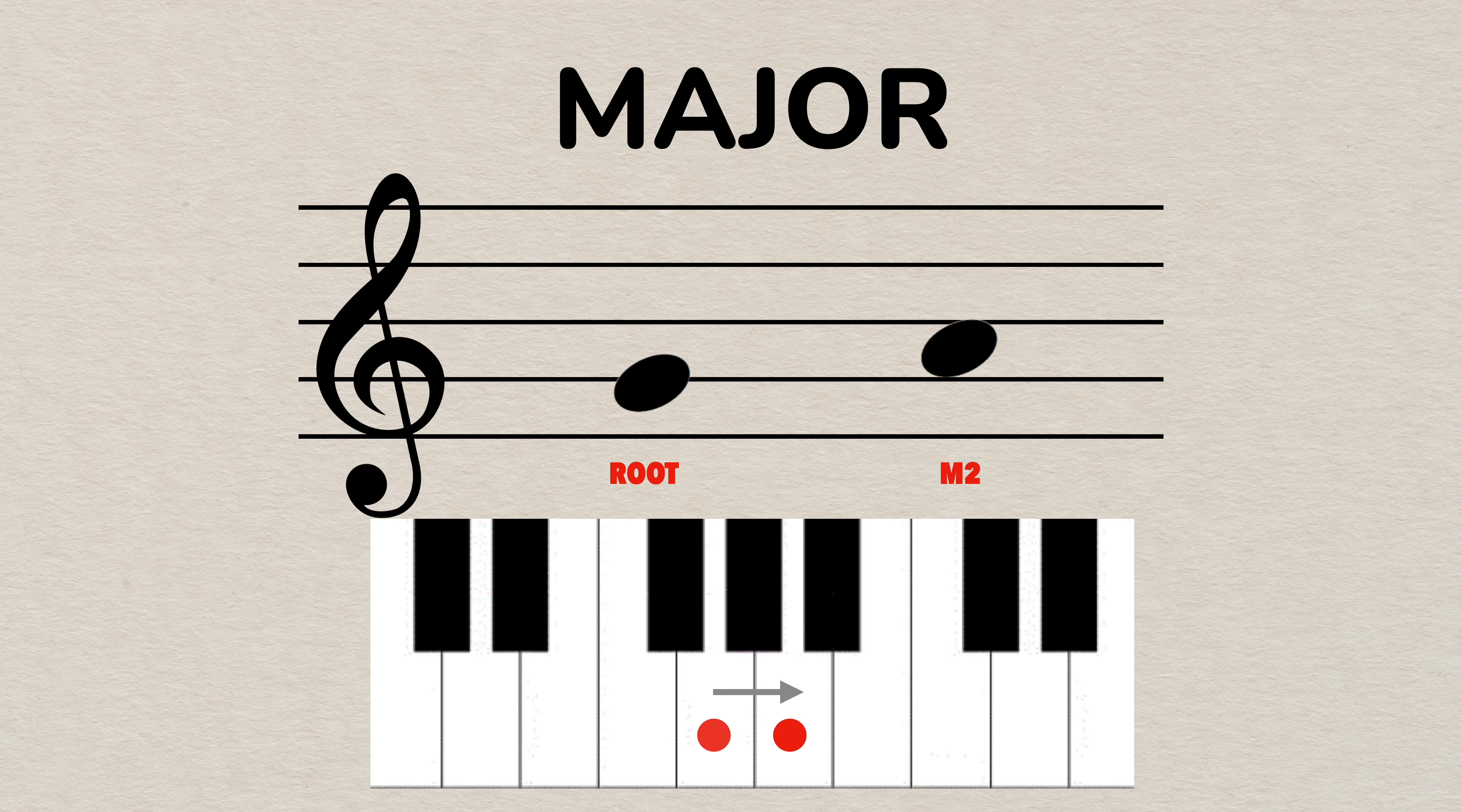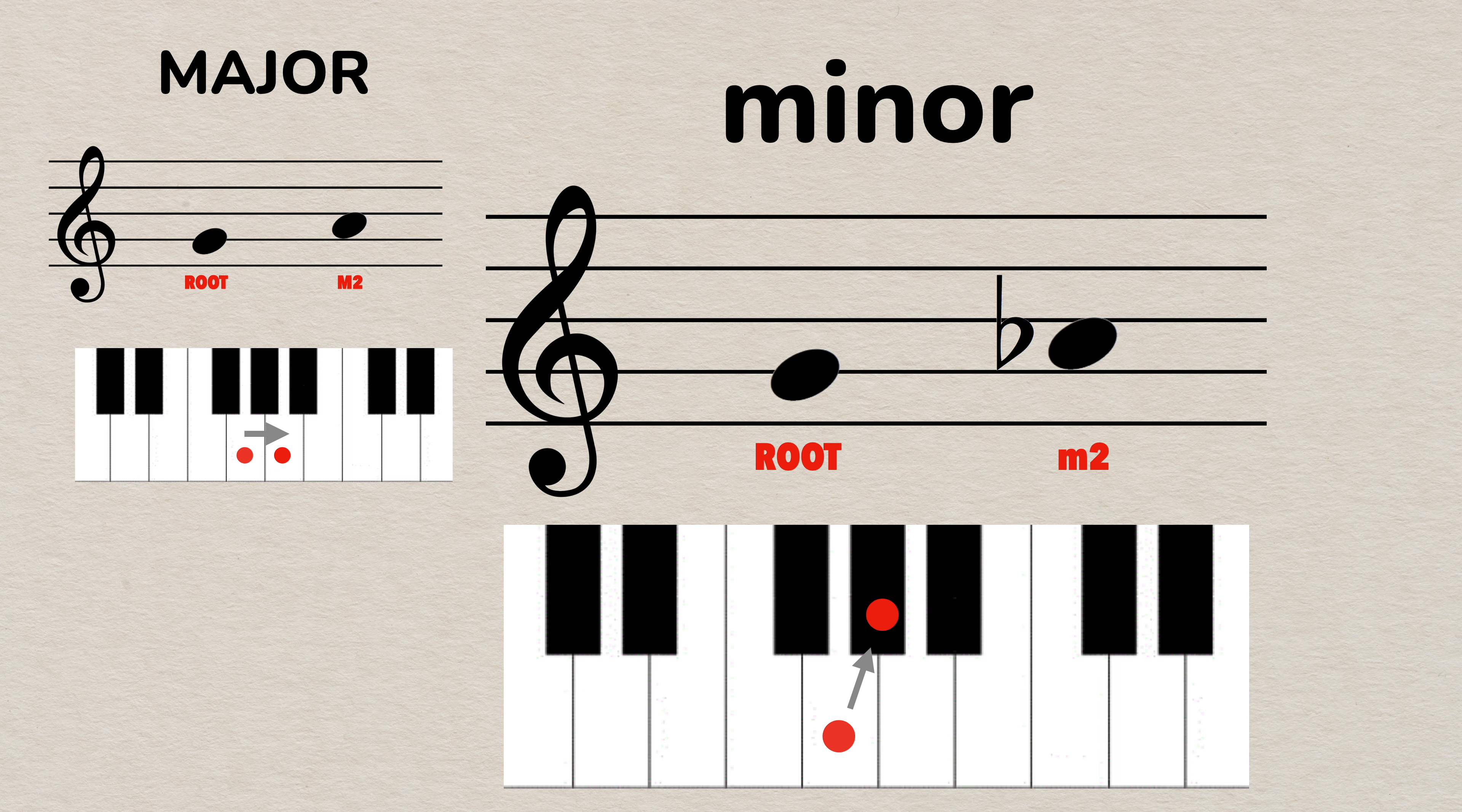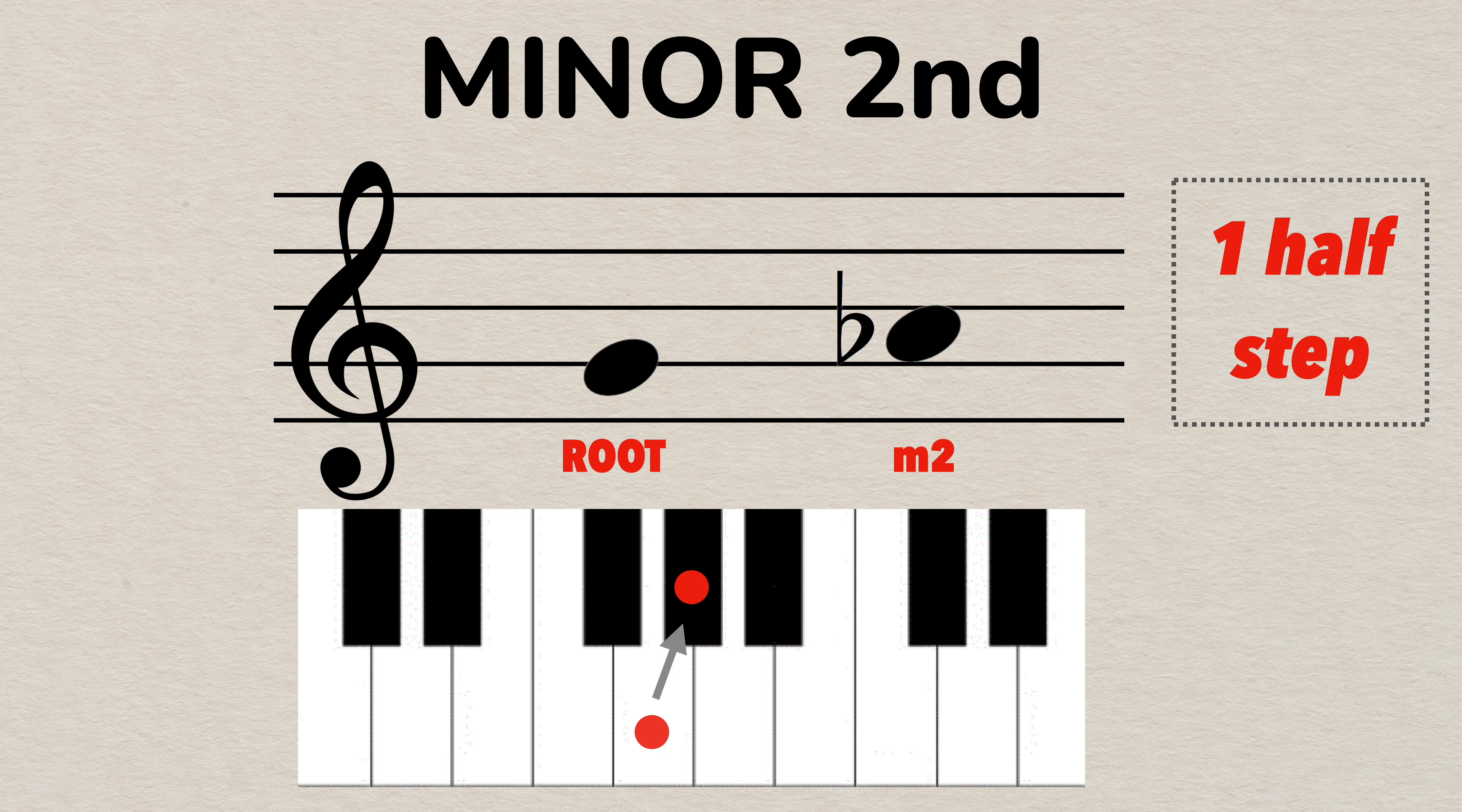For example, if the interval between G and A is a major second, the minor second is an interval between G and A flat. You can also think of a minor interval as being a flattened major interval. Therefore, the root and the minor interval note are always one half step apart in this interval. Any interval that has a distance of one half step is called a minor second.